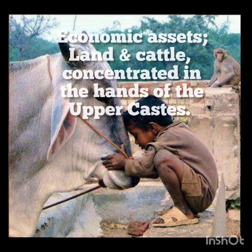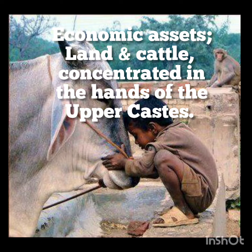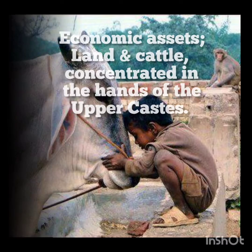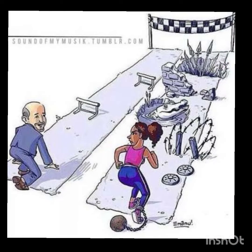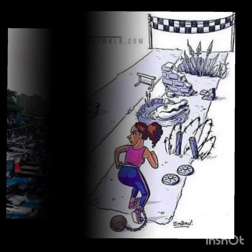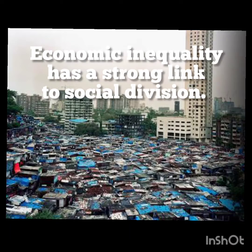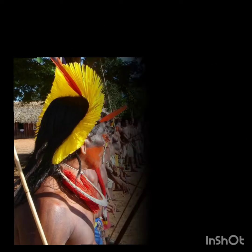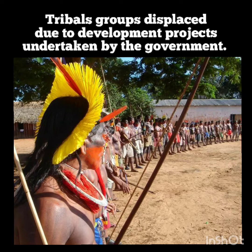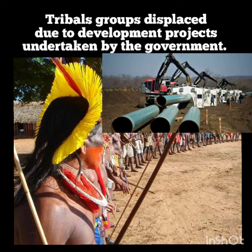Moving on to social inequality and poverty in India: economic assets like land and cattle had been concentrated in the hands of the upper caste. They had exclusive access to education and job opportunities. The lower caste had been confined to low-paying occupations and had no chance to improve their lot. Generation after generation suffered poverty and indignity. Therefore, economic inequality has a strong link to social divisions.